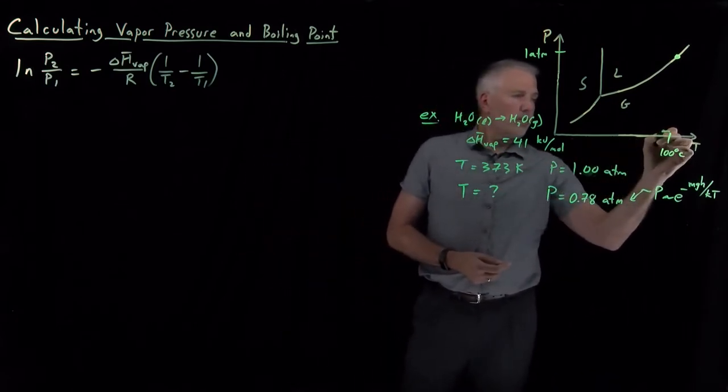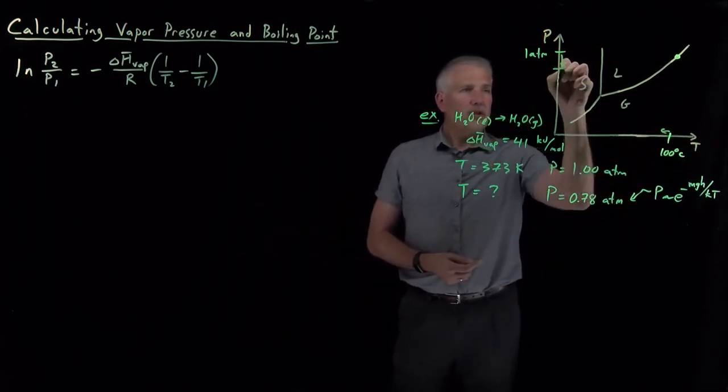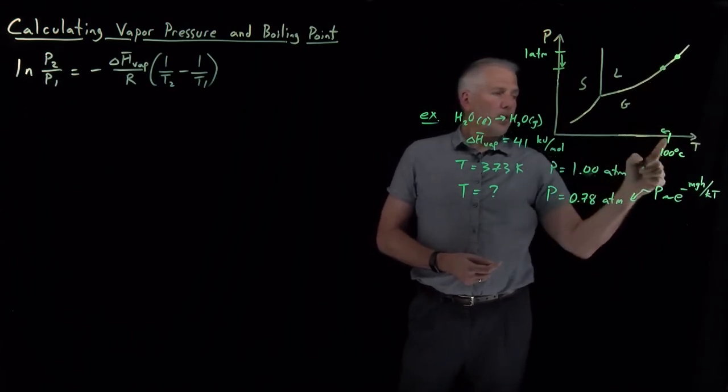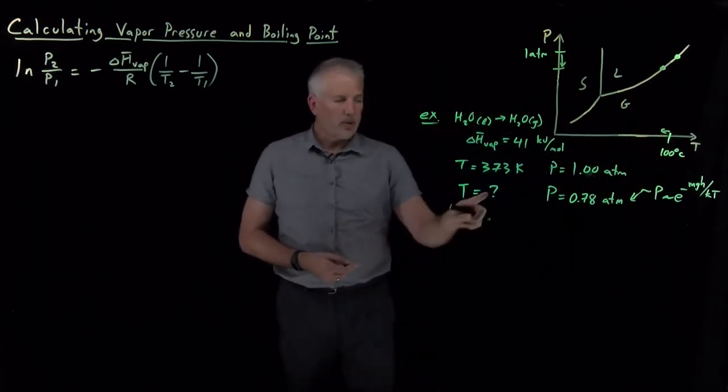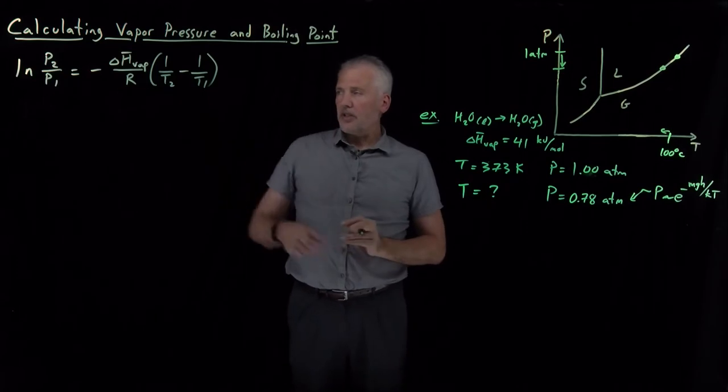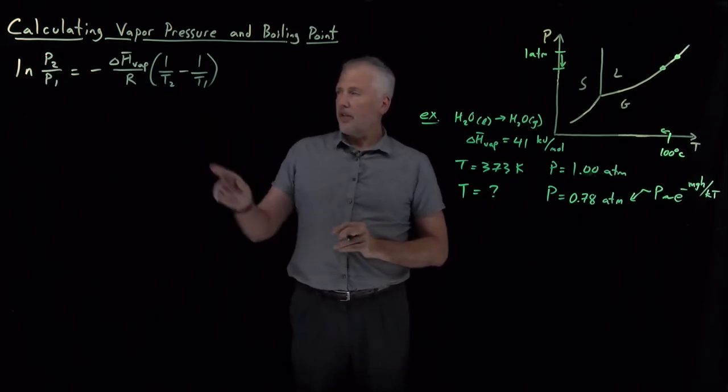In other words, at this somewhat reduced pressure, the boiling point is going to be lower as well. How much will that boiling point be lower? The Clausius-Clapeyron equation tells us how to calculate that.